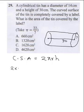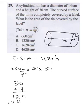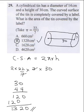So this is going to be 2 times 22/7 times 7 multiplied by 30. The 7s cancel, giving 2 times 22 times 30. That gives us 1,320. So the correct answer is 1,320 cm².